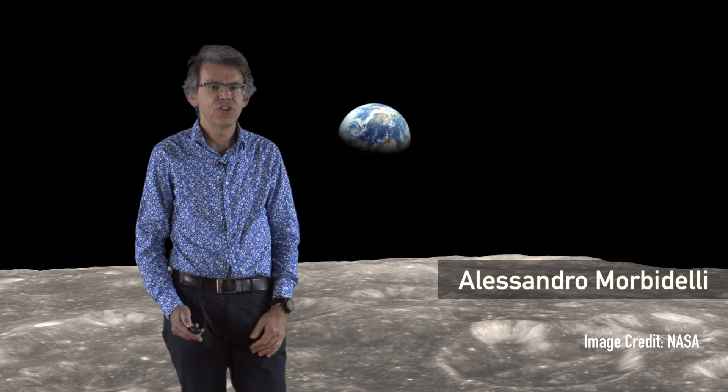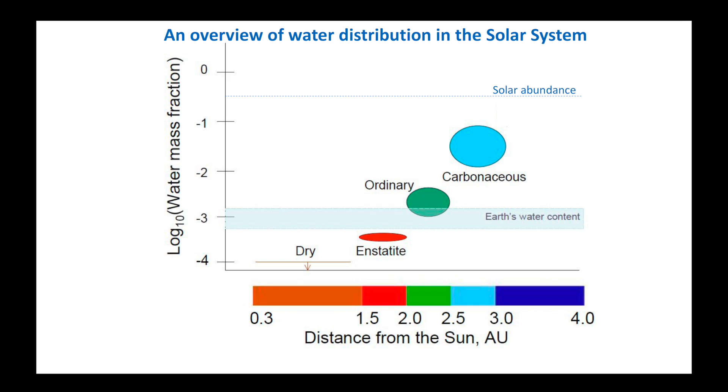Welcome to part 6 of the Mojo project. This video is about the origin of Earth's water. Let's start with an overview of the water distribution in the solar system.